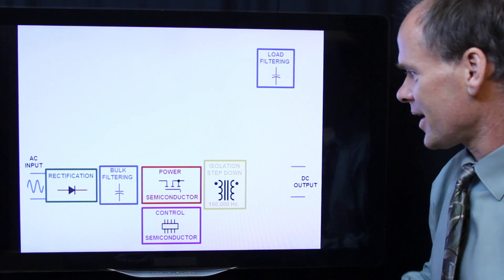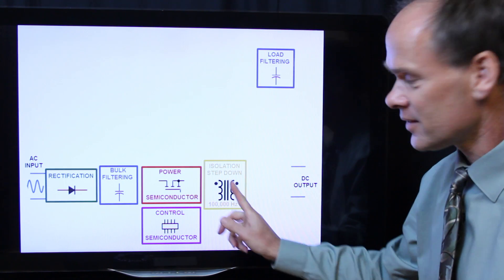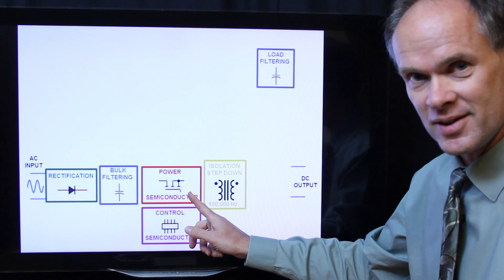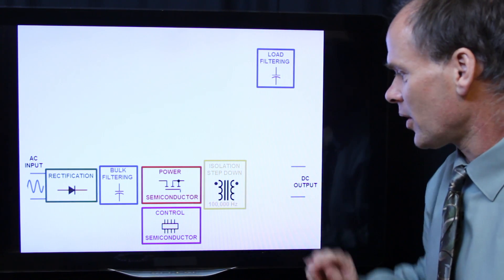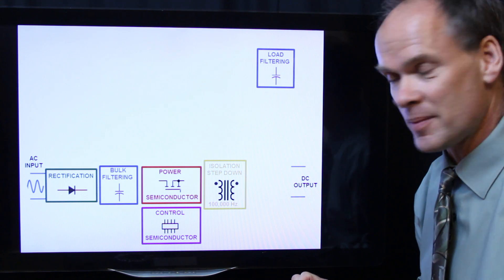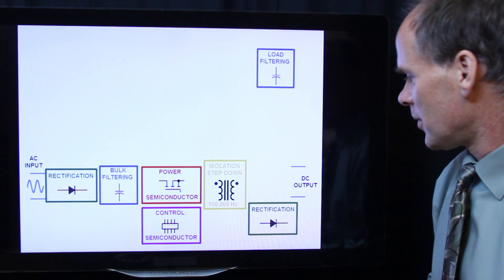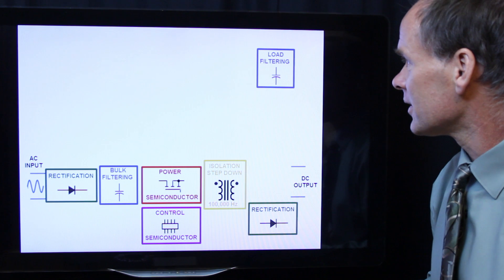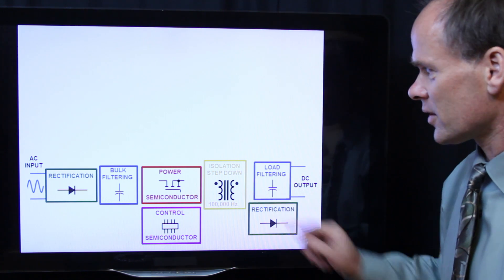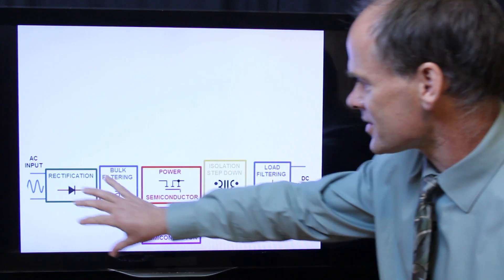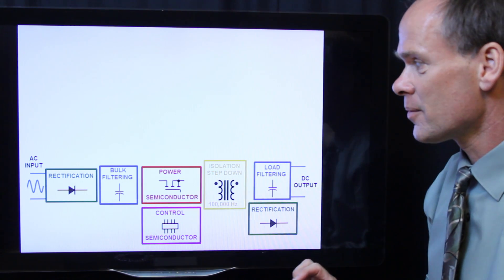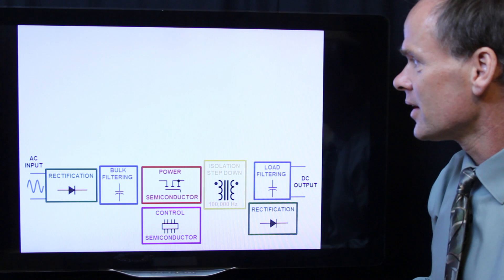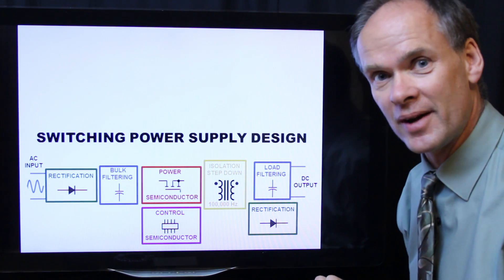My isolation step down transformer is now moved over here to after the power semiconductors and we're going to switch these at maybe 100 kilohertz or so so we can use a smaller transformer in our switching power supply. Add some more rectification on the output and then load filtering. So we've taken basically the same blocks here different semiconductors in them of course different ratings on the parts but we've rearranged the same parts and that's given us our switching power supply design.